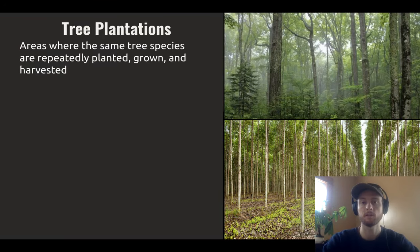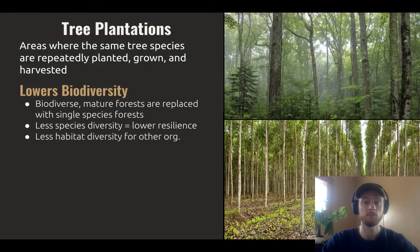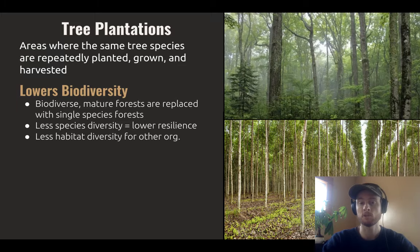Another consequence of clear cutting is that it usually replaces mature forests — like we see in the top picture — with tree plantations, which we can see in the bottom picture. Tree plantations are areas where generally just one species of fast-growing tree is replanted, grown, and then harvested. The problem is this greatly lowers biodiversity. With far fewer tree species, there are far fewer habitats suitable for other organisms that may depend on those species. With less biodiversity in both plants and animals, we have lower ecosystem resilience — so if there were some natural disaster or drought, the tree plantation is far more vulnerable to total ecosystem collapse than a mature forest with wide biodiversity.